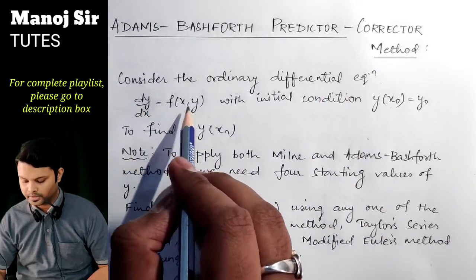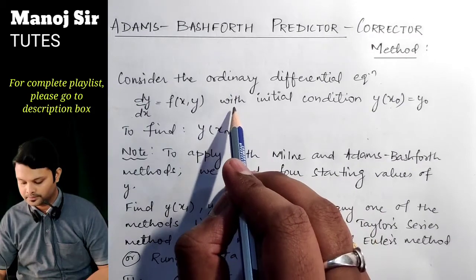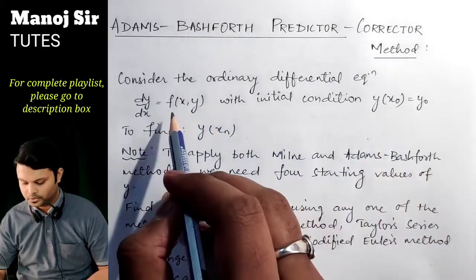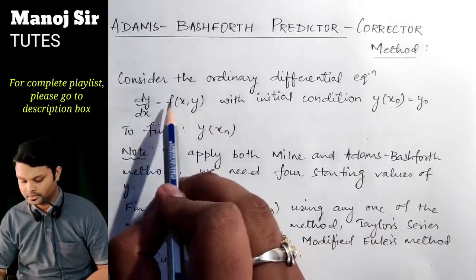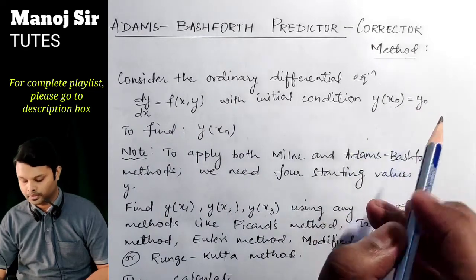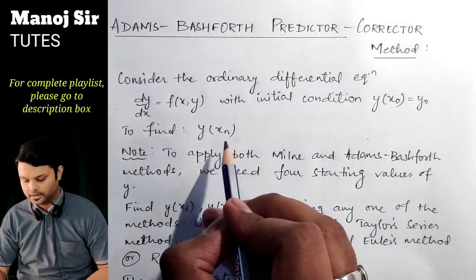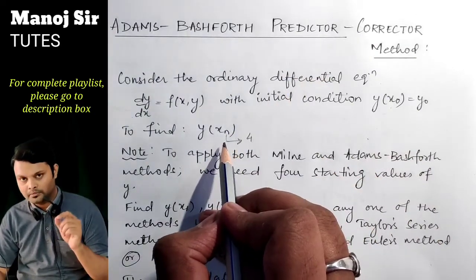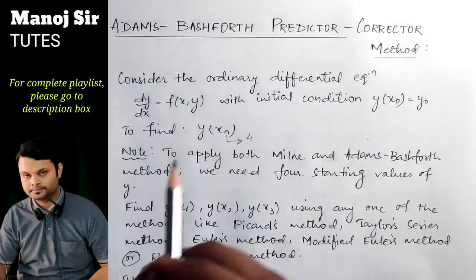Consider the ordinary differential equation dy/dx = f(x, y), given along with the initial condition y = y₀ when x = x₀. In the problem, you will have the function f(x, y) and the initial condition. Suppose you need to find the value of y when x = xₙ. The minimum value of n to apply this method is 4.